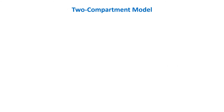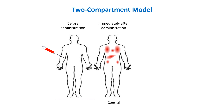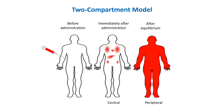The two compartment model improves upon the one compartment model by incorporating drug distribution between two distinct areas: the central compartment and the peripheral compartment. This separation accounts for the distribution process that a one compartment model cannot capture. After drug administration, the drug is assumed to be immediately taken up by the central compartment, representing plasma and highly perfused tissues like kidneys, brain, and liver.